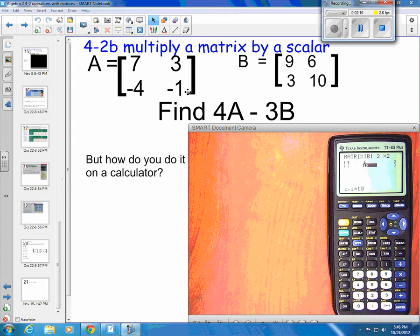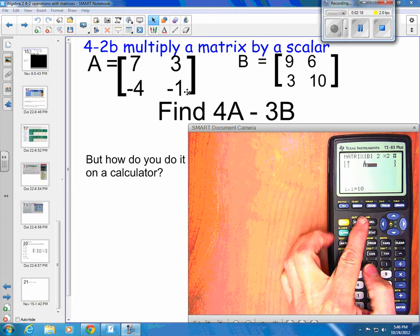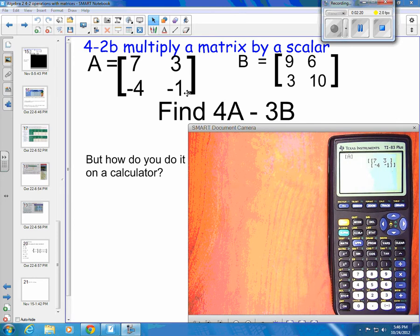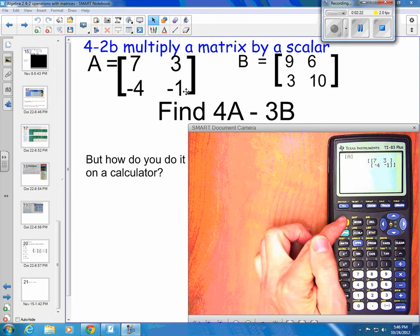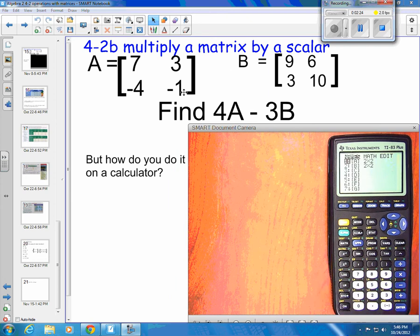Once it's all in there, I can then quit, so 2nd and quit. If I want to see that matrix to verify it's in there, I can go 2nd matrix, come down to B, and press enter. There's my B, and whenever I press enter, it is in fact the right matrix, the one I want to work with.